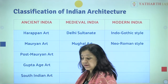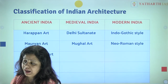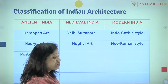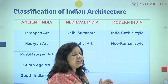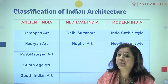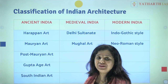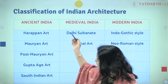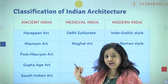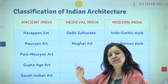South Indian art is quite different from North Indian art. If you see the culture, tradition, language, and monuments of South India, you will agree there are significant differences between North and South — be it food, language, or culture. So in ancient India, we cover Harappan art, Mauryan art, post-Mauryan art, Gupta, and South Indian art.